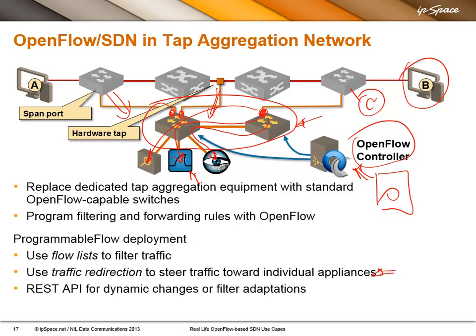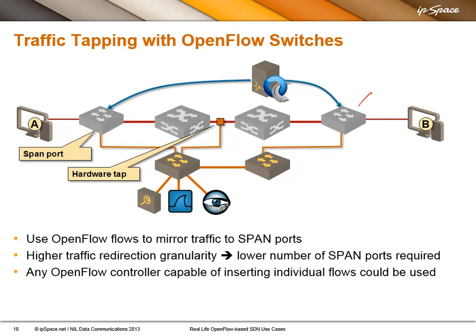You can deploy OpenFlow in this particular use case out of band if you wish. You don't have to touch the production network at all — no production switches are OpenFlow-enabled — which is a nice migration strategy if you're interested in OpenFlow. Whereas once you have OpenFlow switches in the forwarding path, the controller can — depending on what it supports — insert forwarding entries where a particular set of packets matching certain criteria would be sent along the forwarding path from A to B, but would also be replicated on a SPAN port. It's like Lawful Intercept or IP Multicast, only more precise because you can use n-tuples in the switches to replicate the traffic.